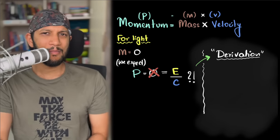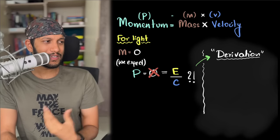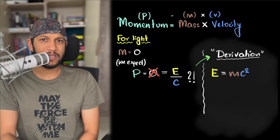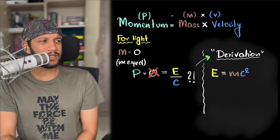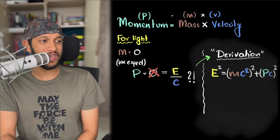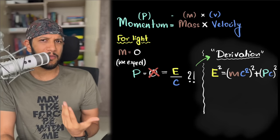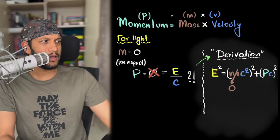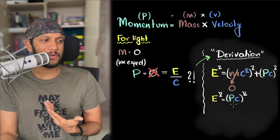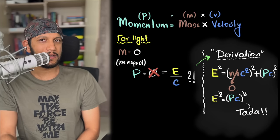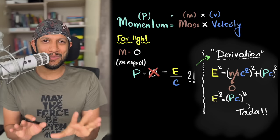My idea was: if I can understand the math, maybe I can understand the physics. Boy was I wrong. Their derivation starts by saying 'remember Einstein's equation E=mc².' Then it says that's not the complete equation — this is the complete Einstein's equation. Since light has zero mass, substitute mass equal to zero, and you get E² = (pc)², so the squares cancel out giving you p = E/c. Tada — but that doesn't explain anything.